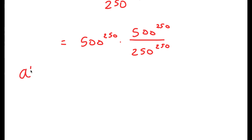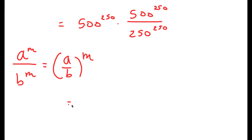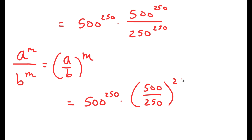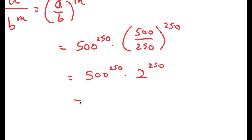Now, if I have something in the form a to the power of m over b to the power of m, this is equal to a over b to the power of m. So now I get 500 to the power of 250 times 500 over 250 to the power of 250. And this turns into 500 to the power of 250 times 2 to the power of 250, which is equal to 1000 to the power of 250.